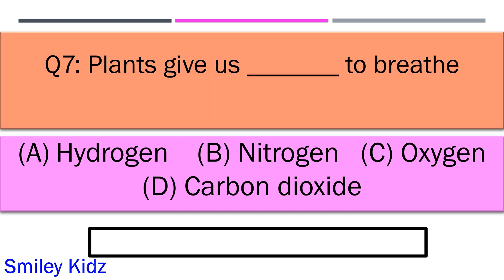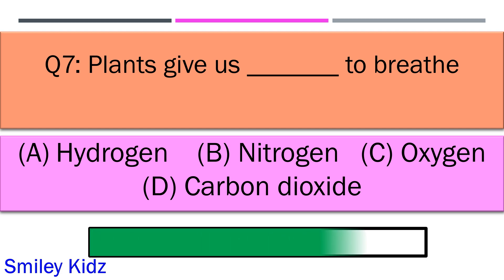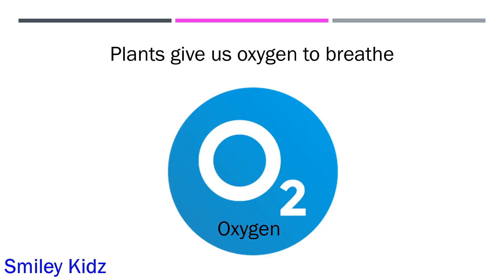Plants give us dash to breathe. Option A hydrogen, option B nitrogen, option C oxygen, and option D carbon dioxide. Your time starts now. And your time is up and the right answer is option C oxygen.